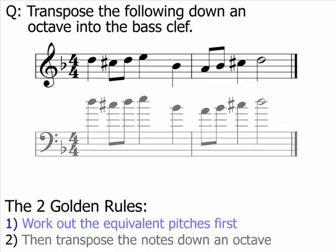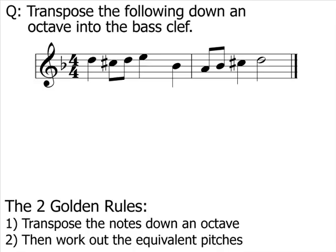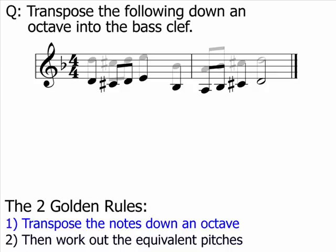So we've already decided that working out the equivalent notes is a bit silly given the ledger lines it'd produce, so instead we'll do the transposition part of the rules first. All we do is move down our notes by one octave. Now that we've tackled the transposition, we can concentrate on working out the equivalent pitches in the bass clef, our golden rule number two.